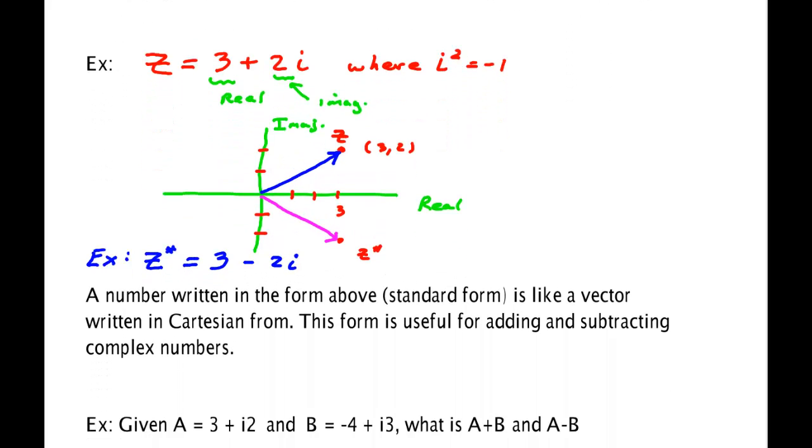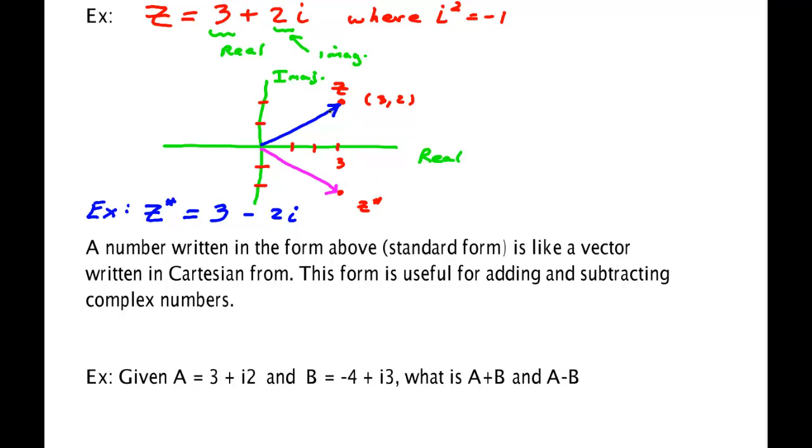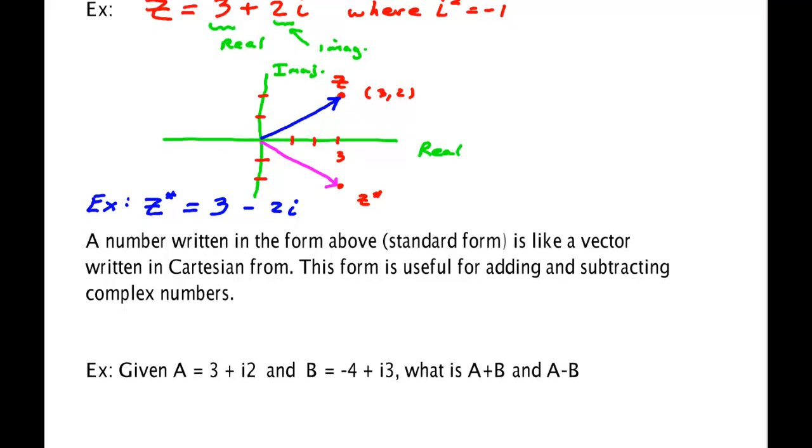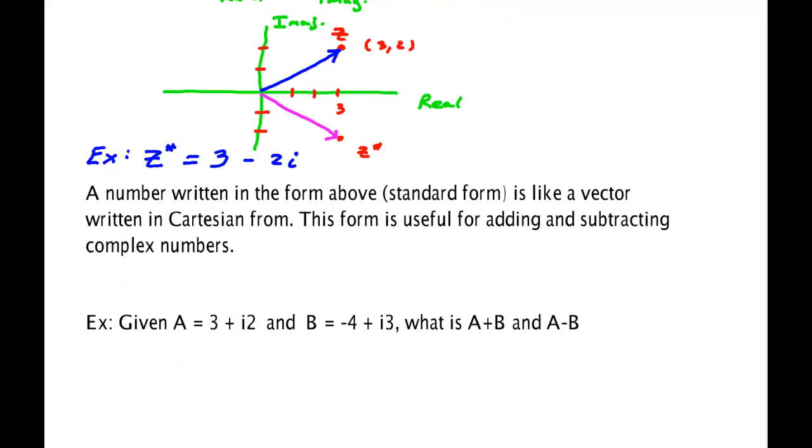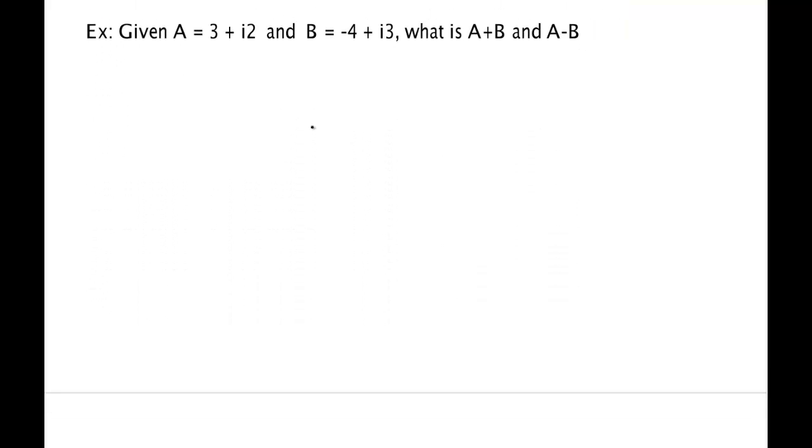For instance, how to add complex numbers. Well, it turns out, to add complex numbers, we're just going to add up arrows, just like we did with vectors. So, this is very convenient when they're in this form, just as the Cartesian form of a vector is very convenient for adding vectors. This standard form is very convenient for adding complex numbers. So, given that complex number A is 3 plus 2i, and B is minus 4 plus 3i, what is A plus B and what is A minus B?